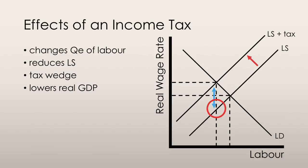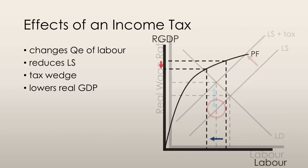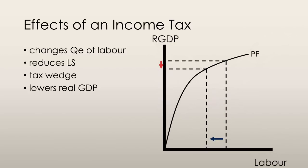We've established that the full employment quantity of labor changes. If we go back to the production function discussed in a previous lecture, we see that this impacts potential GDP as well. Since the quantity of labor has decreased, the quantity of real GDP produced at full employment will also decrease, thus reducing potential GDP.